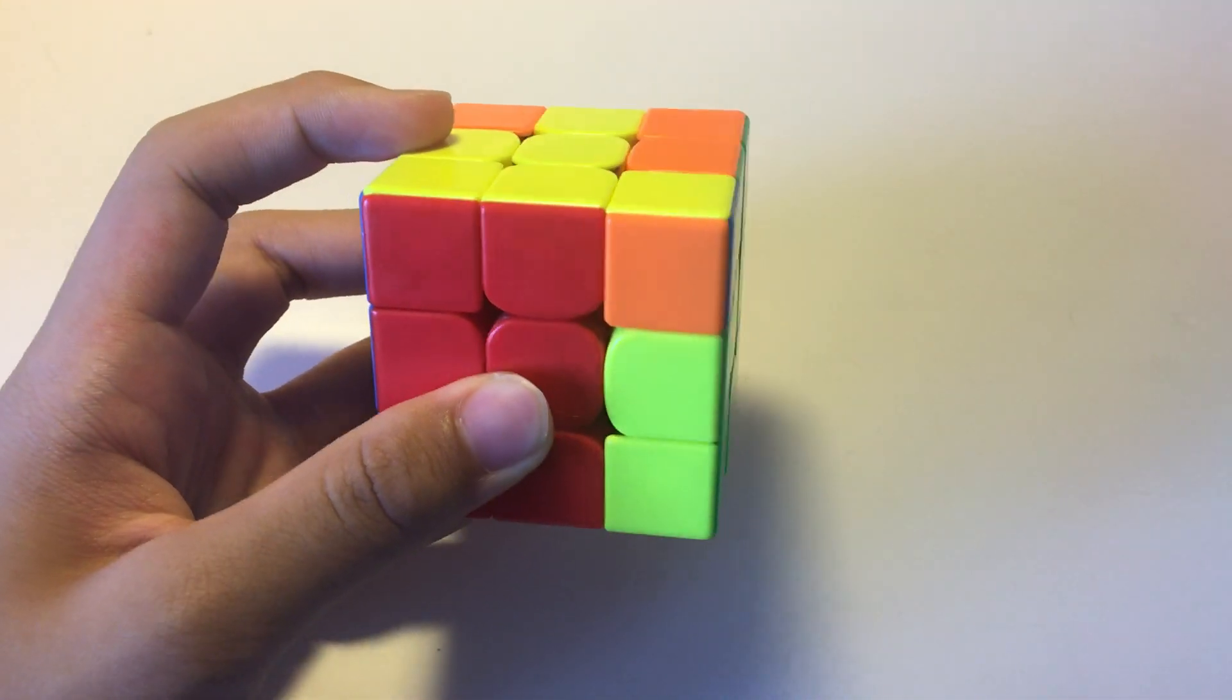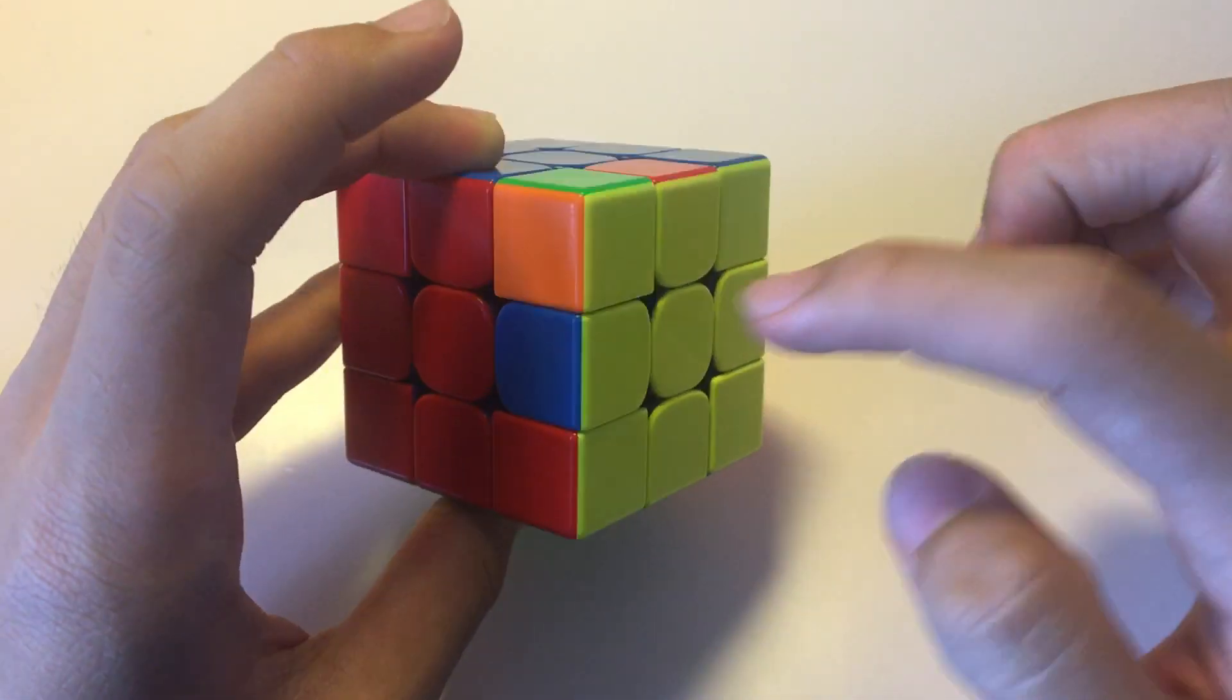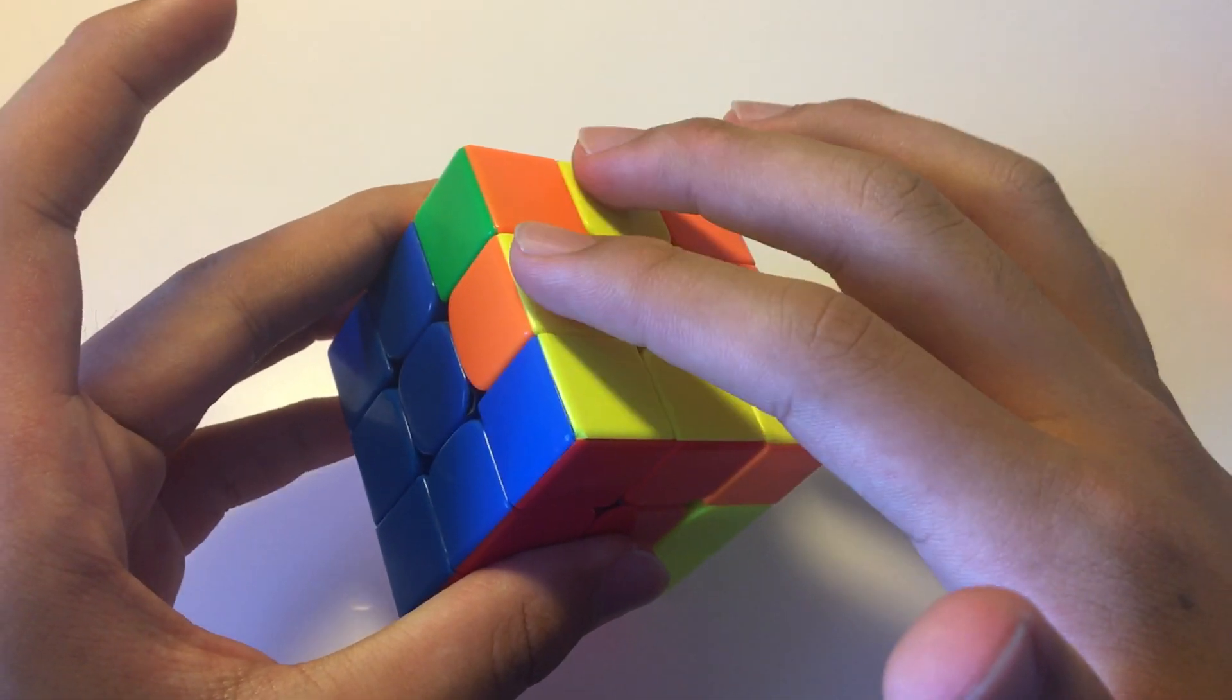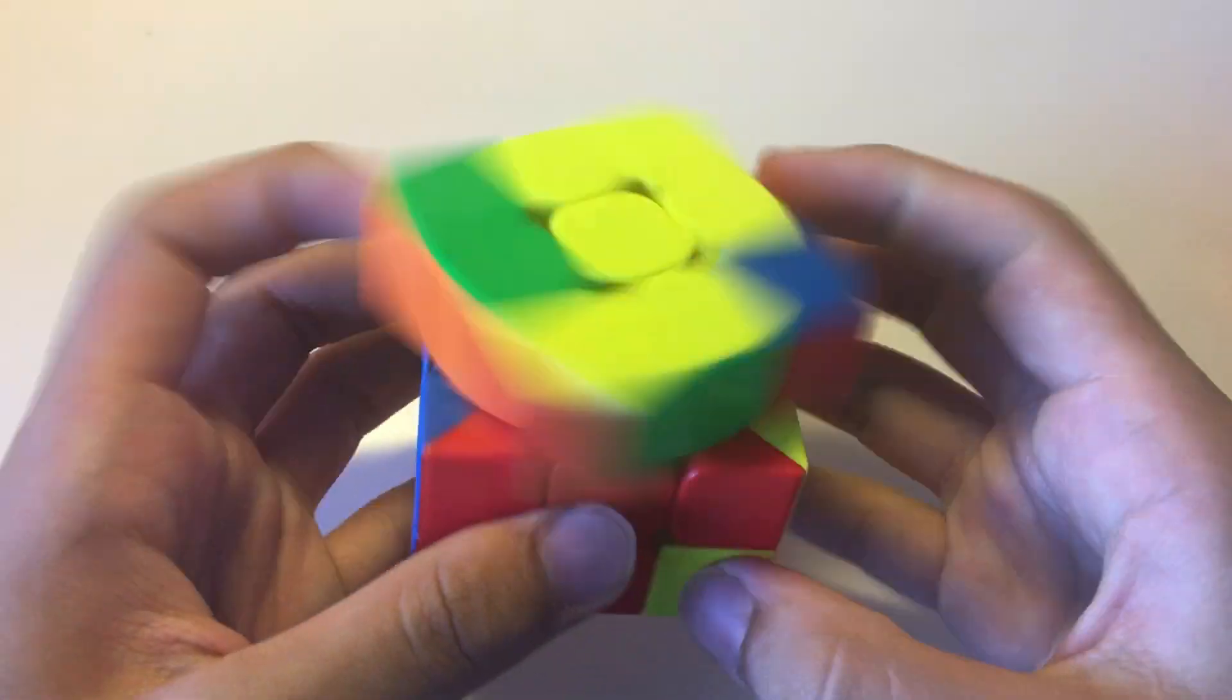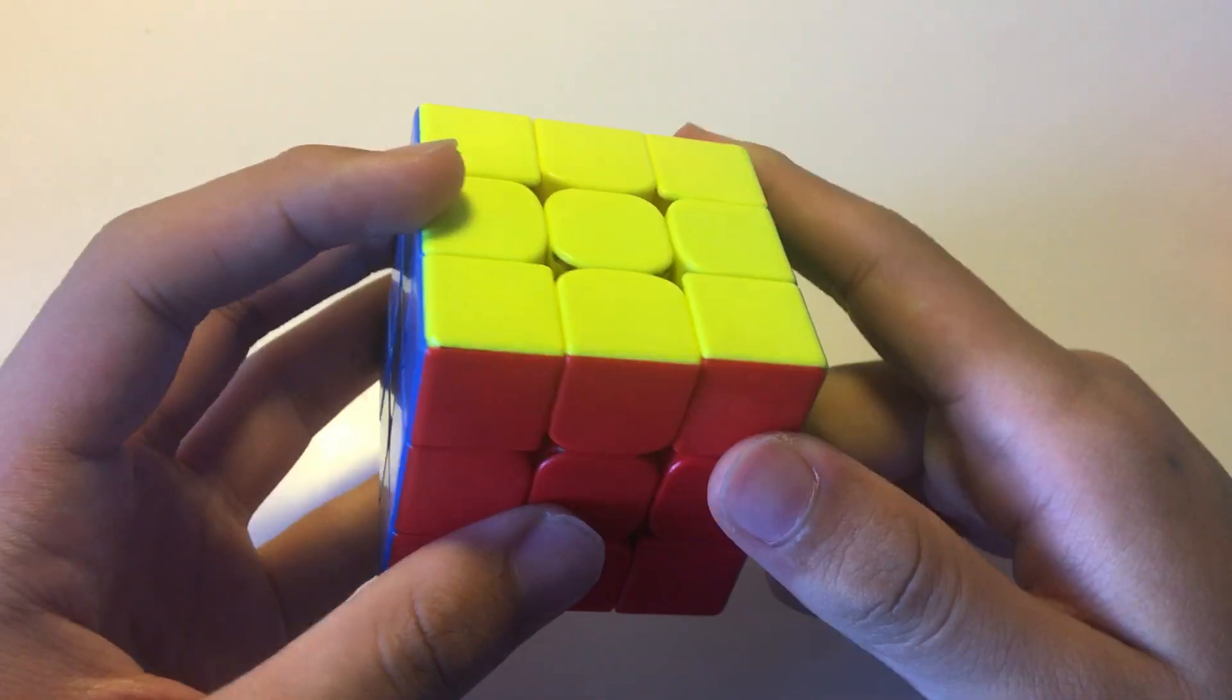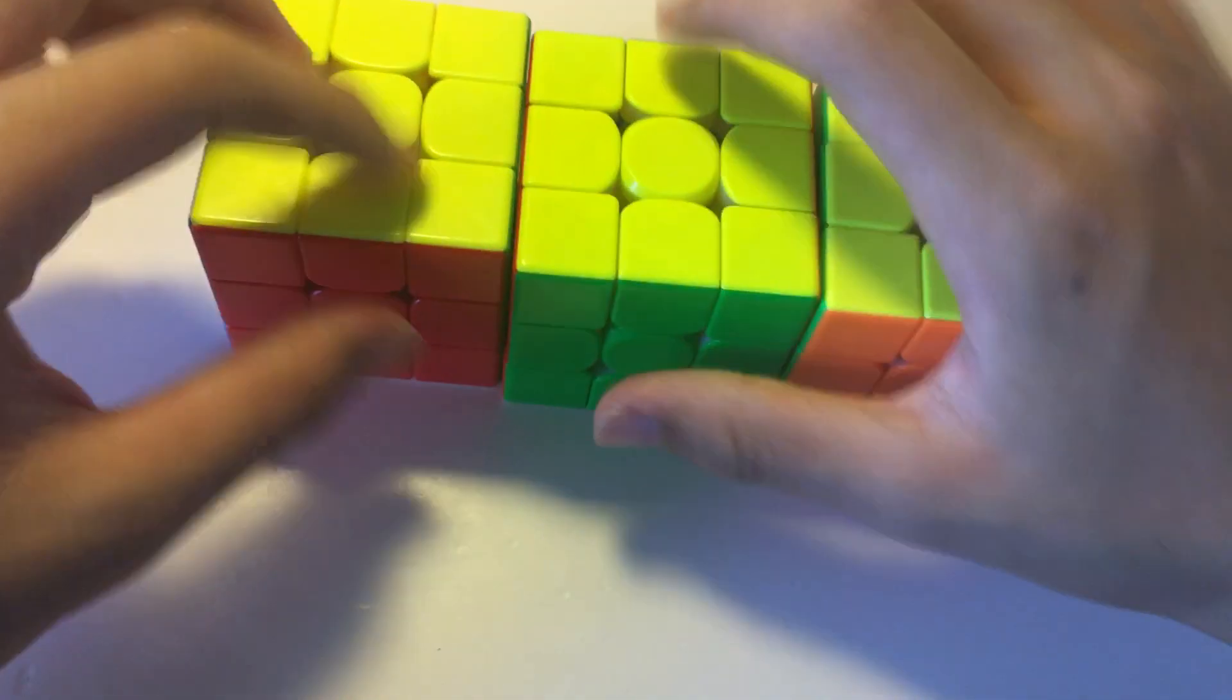And that's exactly what a Y perm does, right? A Y perm, a normal Y perm case swaps these two edges and these two corners. So here we're also swapping these two edges and these two corners. So we just do a Y perm to solve all that. And then we just undo the setup move to solve the entire cube. That's essentially how a conjugation ZBLL works.